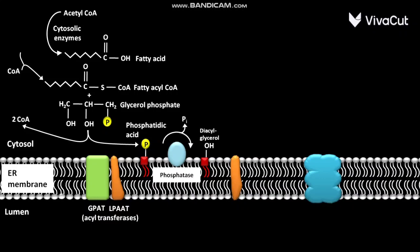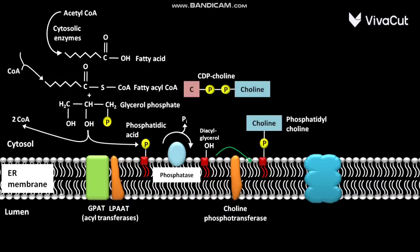The smooth ER membrane also has another associated enzyme called choline phosphatransferase. In the presence of choline phosphatransferase, the diacylglycerol is converted into phosphatidylcholine and CDP-choline is converted into CMP.